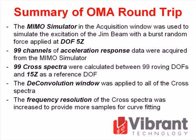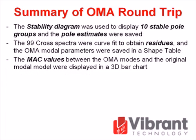To summarize this tutorial: the MIMO simulator was used to simulate excitation of the Jim Beam with burst random force at DOF 5Z. 99 channels of acceleration response data were acquired. 99 cross-spectra were calculated between 99 roving DOFs and 15Z as a reference DOF. The deconvolution window was applied to all cross-spectra. Frequency resolution was increased to provide more samples for curve fitting. The stability diagram was used to display 10 stable pole groups and save pole estimates. The 99 cross-spectra were curve fit to obtain residues and OMA modal parameters were saved in a shape table. MAC values between OMA modes and the original modal model were displayed in a 3D bar chart.